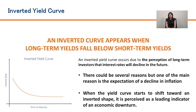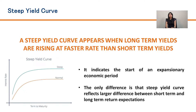The next type is the inverted yield curve. In this curve, the shorter tenure pays a higher interest rate compared to the longer tenure. This happens because there is low or no confidence in the economy, and this yield curve is taken as a leading indicator of an economic downturn.